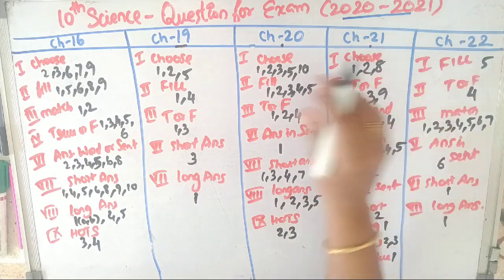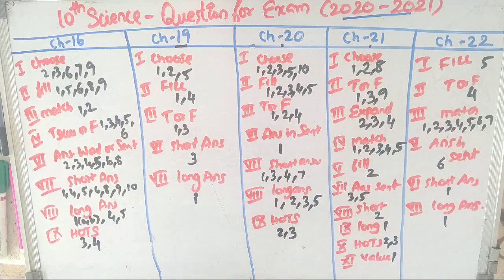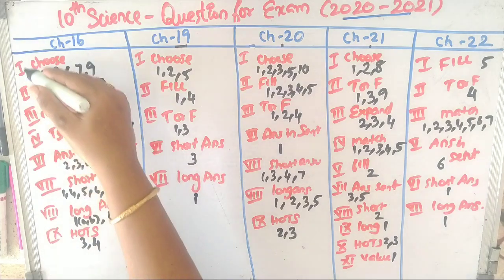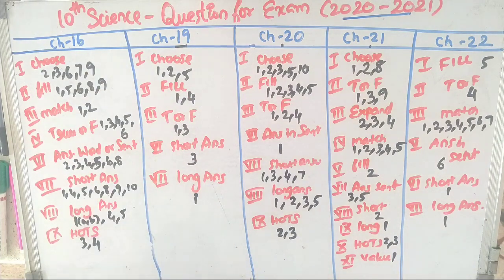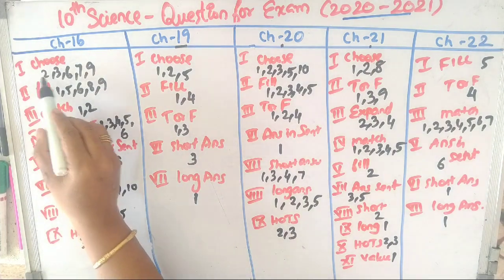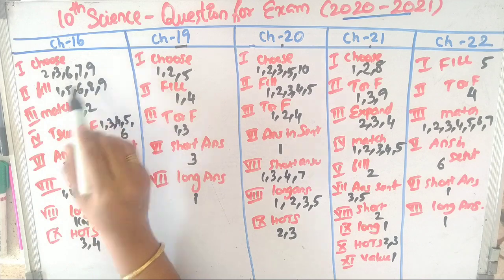Let's take a look at the Roman numeral sections. First, choose: 2, 3, 6, 7, 9.